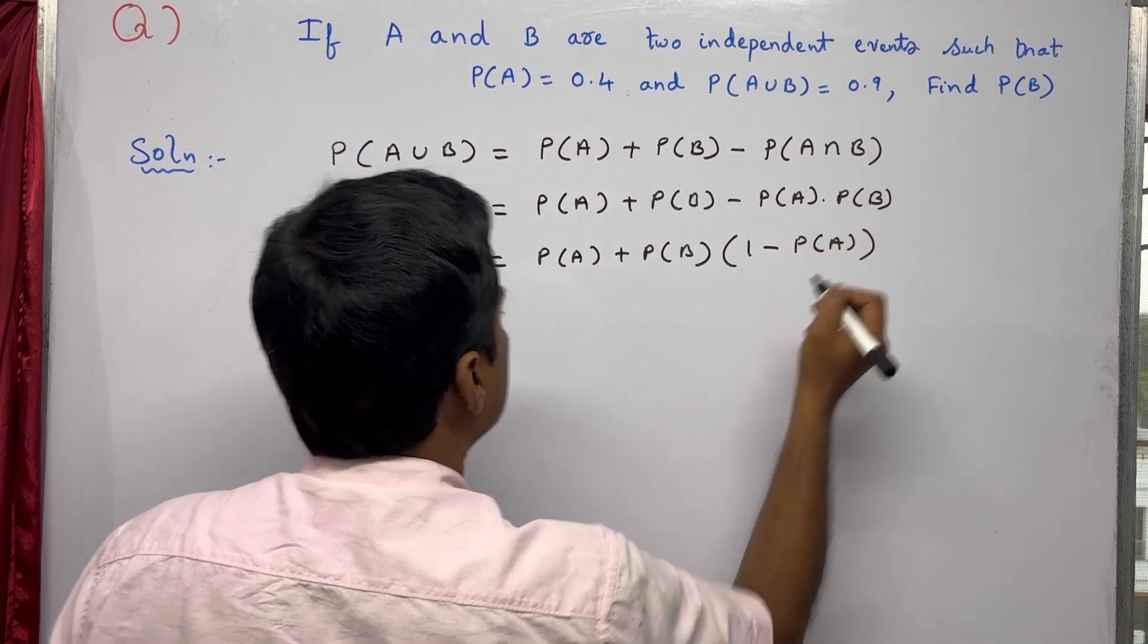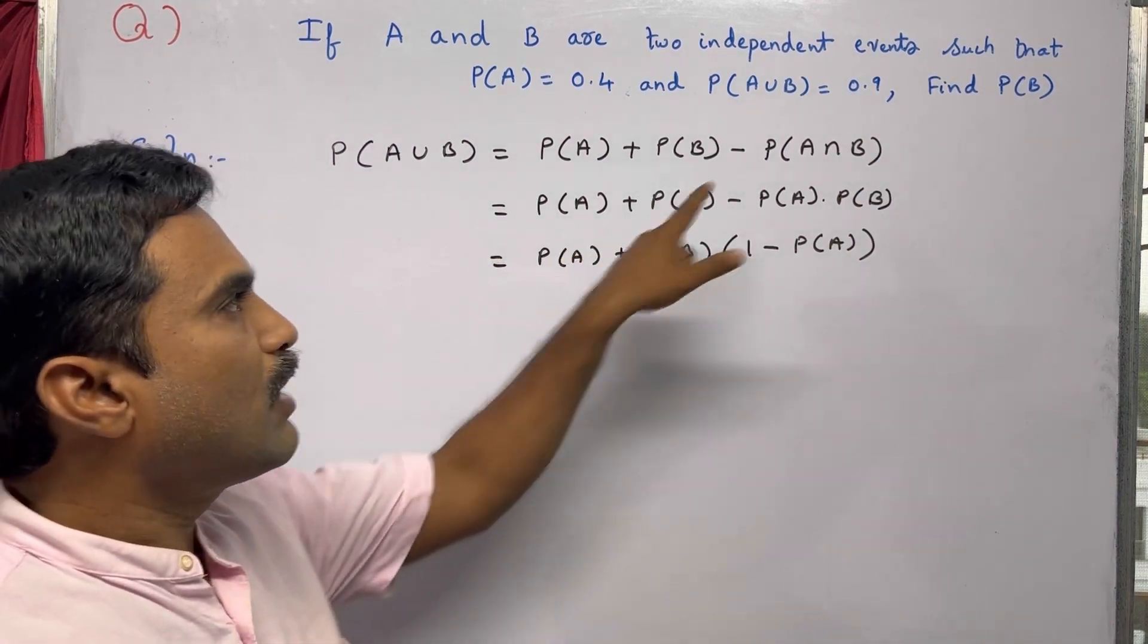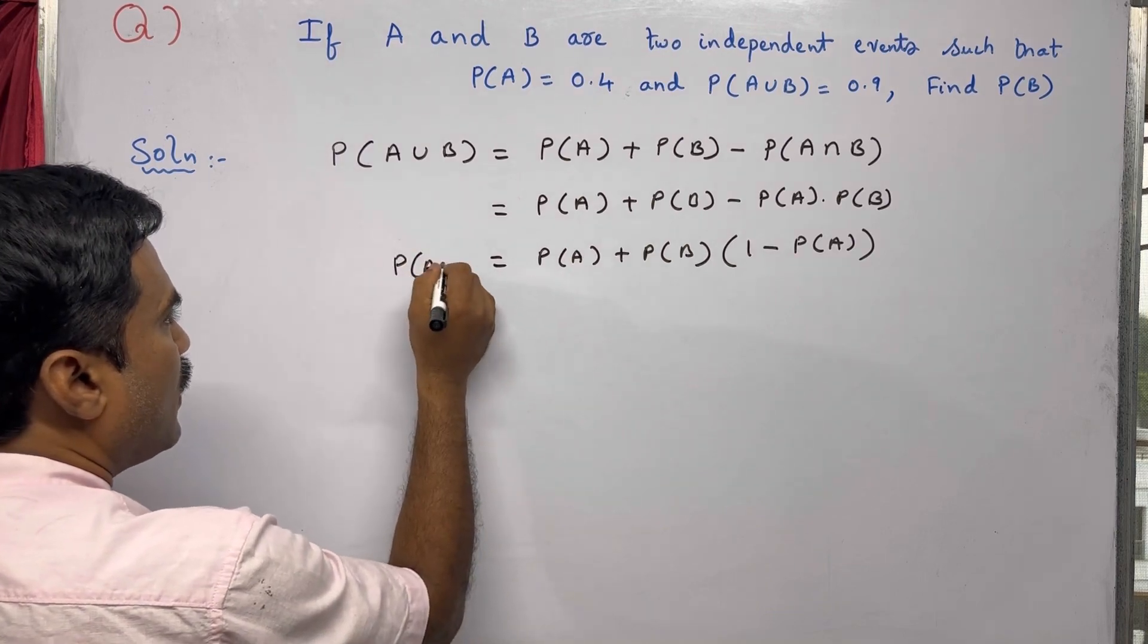Now we are going to substitute the values that are given. P(A∪B) value is given, that is 0.9. So this is P(A∪B).